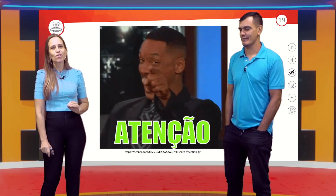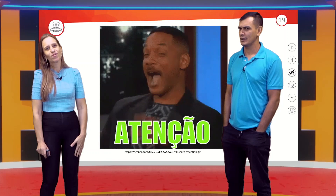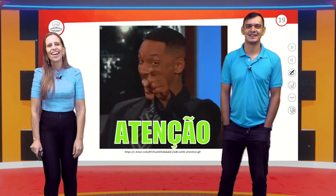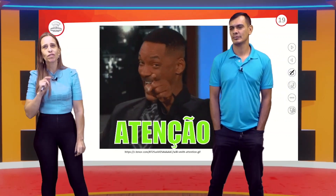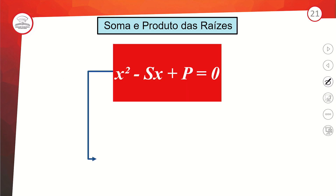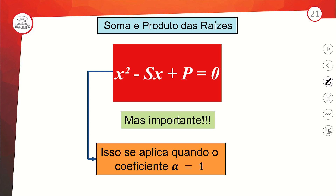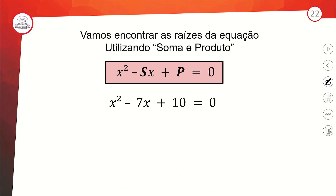A função quadrática no primeiro ano tinha umas 5 ou 6 aulas; aqui é só para relembrar. Existe um mecanismo chamado soma e produto que, sem aplicar a fórmula de Bhaskara, a gente chega ao x1 e x2. Quando o A é 1, a soma das raízes é o sinal contrário do B, e o produto das raízes é o próprio C.